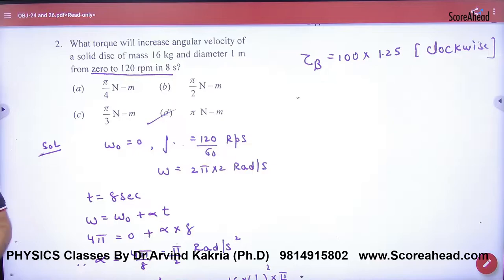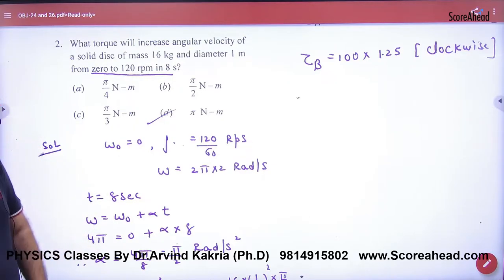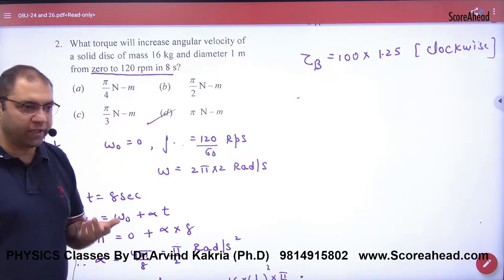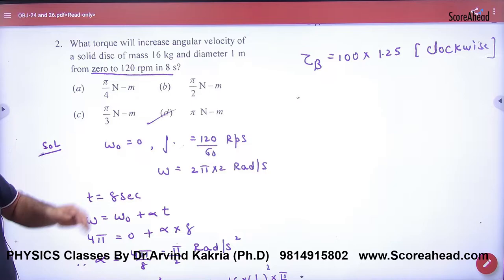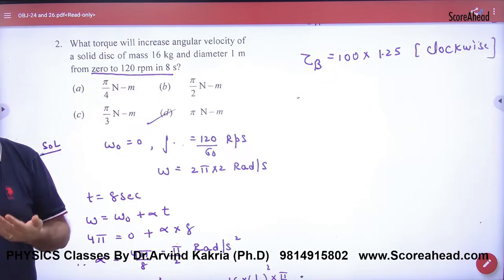The second problem is what torque will increase angular velocity of a solid disk whose mass and radius both known, from 0 to 120 rpm.